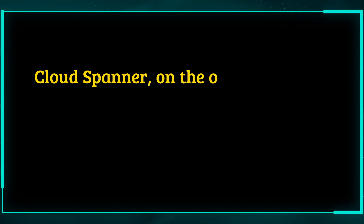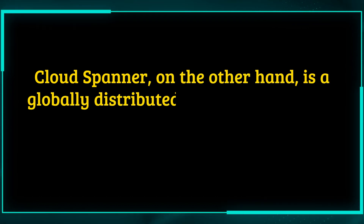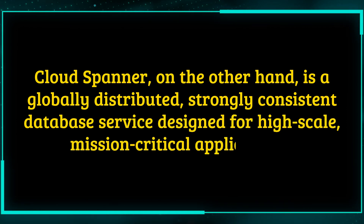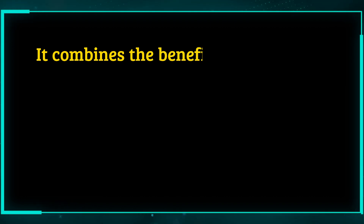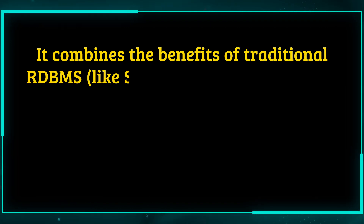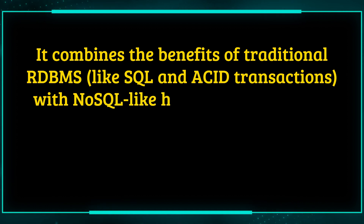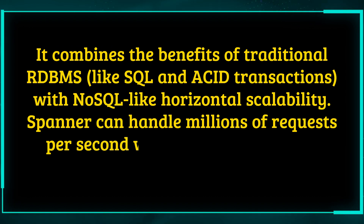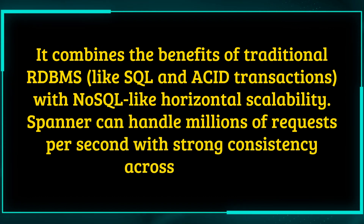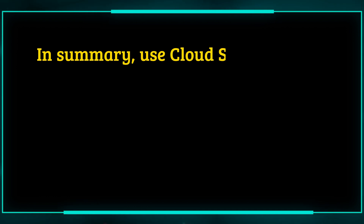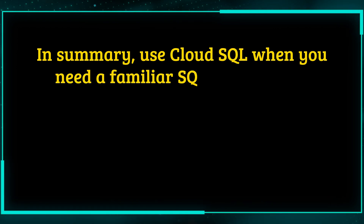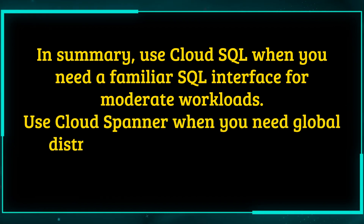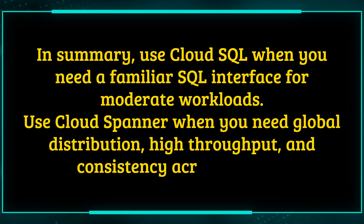Cloud Spanner, on the other hand, is a globally distributed, strongly consistent database service designed for high-scale, mission-critical applications. It combines the benefits of traditional RDBMS — like SQL and ACID transactions — with NoSQL-like horizontal scalability. Spanner can handle millions of requests per second with strong consistency across regions. In summary, use Cloud SQL when you need a familiar SQL interface for moderate workloads. Use Cloud Spanner when you need global distribution, high throughput, and consistency across regions.